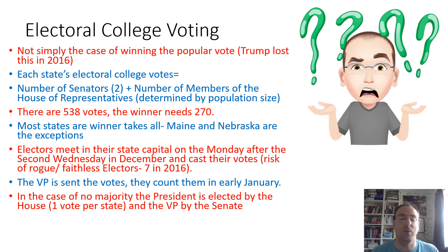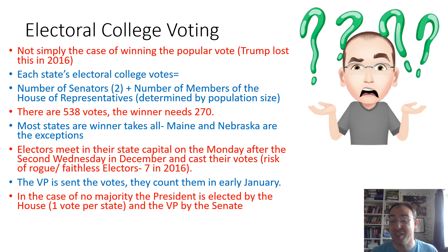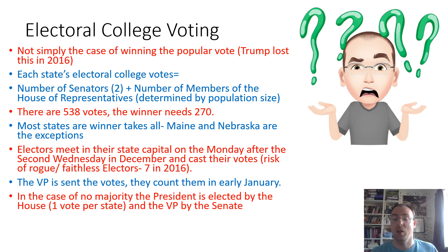To win, you need to get 270 out of the 538 Electoral College votes. Most states are winner-takes-all — the two exceptions are Maine and Nebraska, which use a kind of proportional system. Electors meet in their state capital on the Monday after the second Wednesday in December and cast their votes. There is a risk of rogue or faithless electors — there were seven of these in 2016. The vice president is then sent the votes and counts them in early January. Remember, this system was set up a couple of hundred years ago when travel and communication were a lot slower. In the case of there being no majority — which has only happened twice — the president is elected by the House with one vote per state, and the vice president is selected by the Senate.